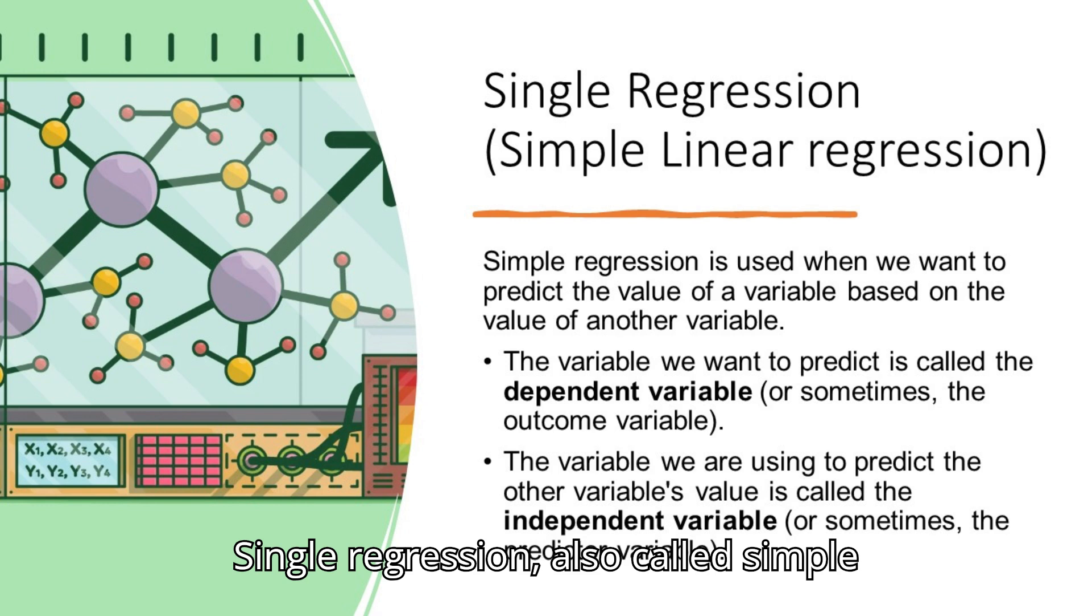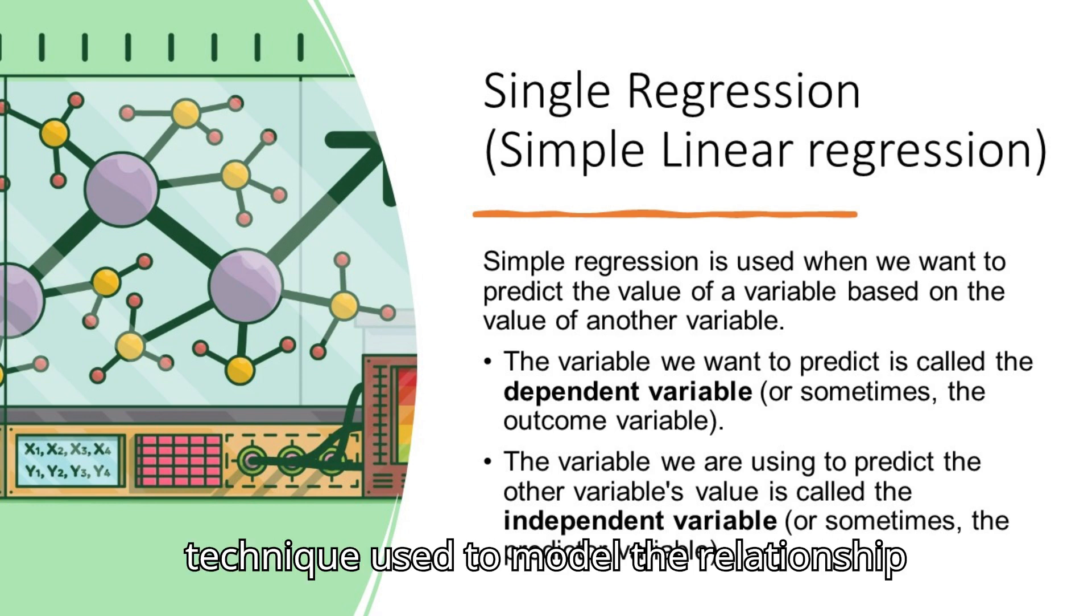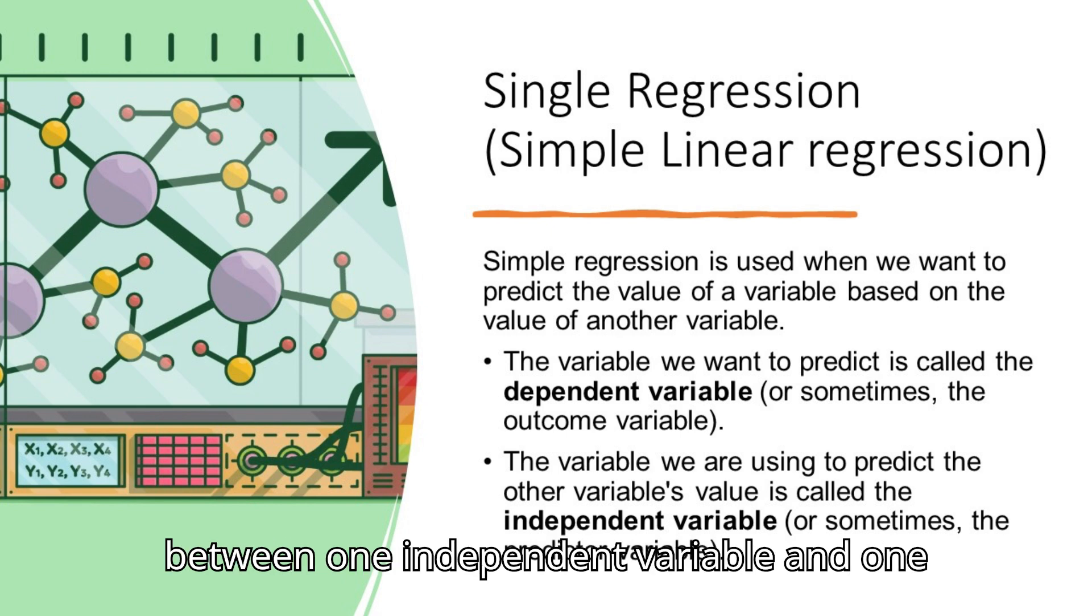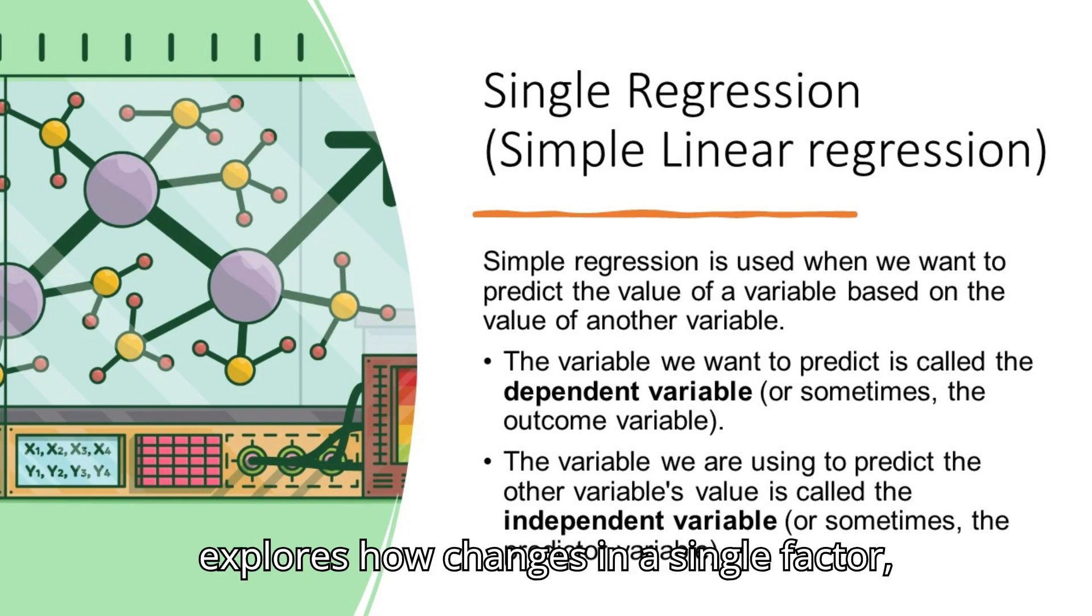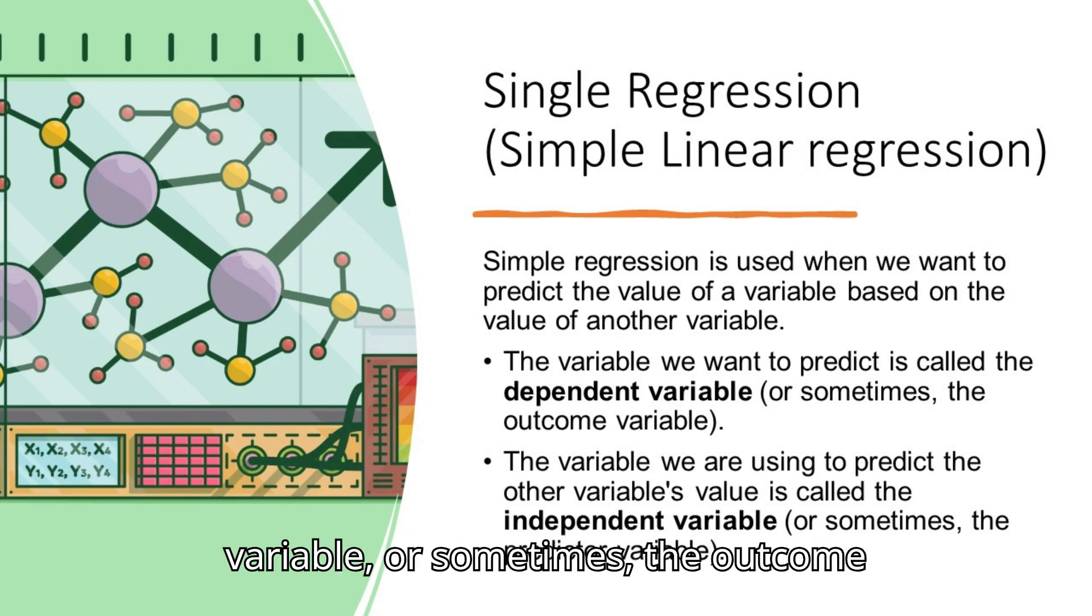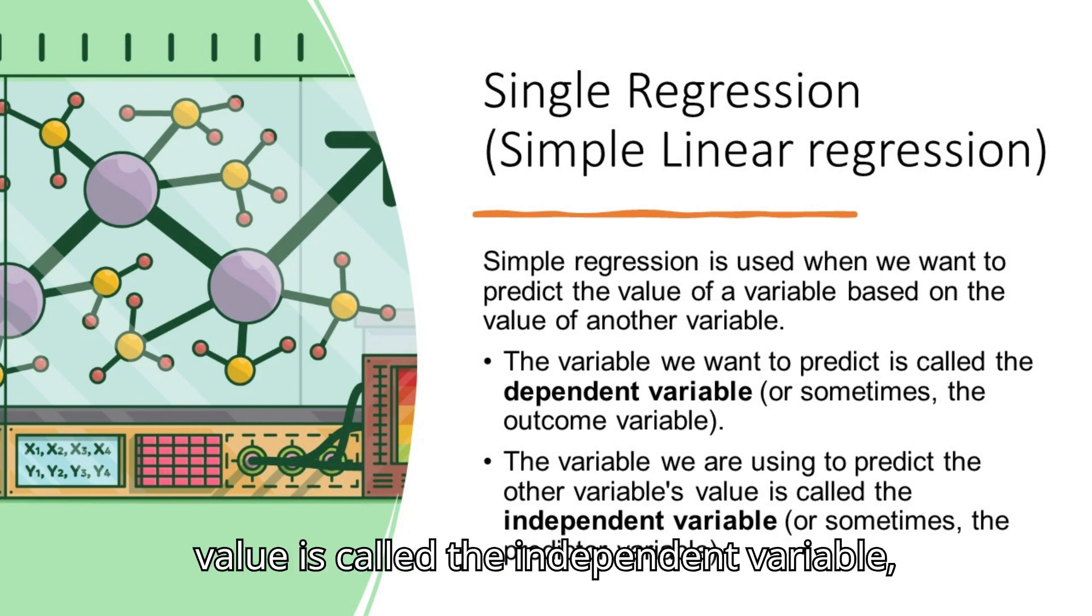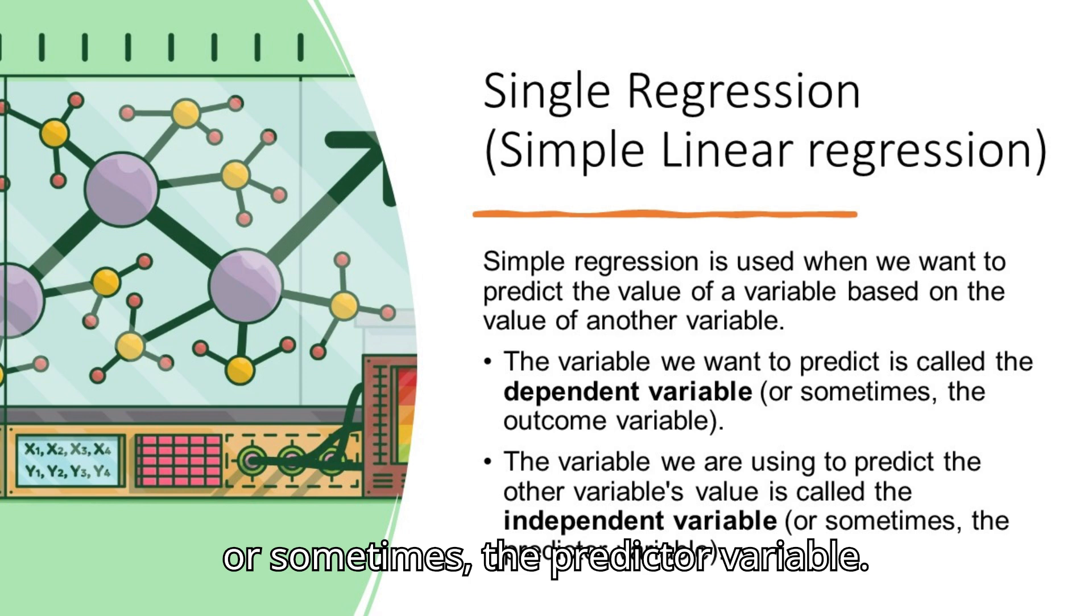Single regression, also called simple linear regression, is a statistical technique used to model the relationship between one independent variable and one dependent variable. It essentially explores how changes in a single factor, the independent variable, influence a dependent variable. The variable we want to predict is called the dependent variable, or sometimes, the outcome variable. While the variable we are using to predict the other variable's value is called the independent variable, or sometimes, the predictor variable.